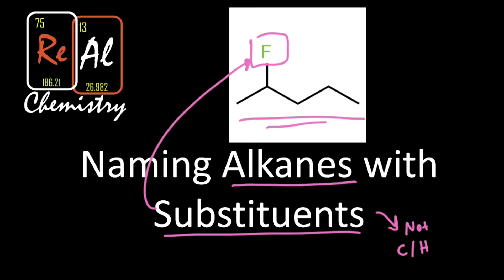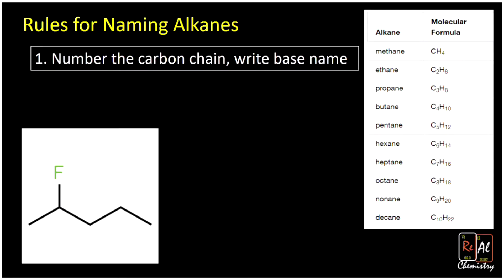So we've got to start somewhere to get to those really cool things. There's a whole list of rules we'll go through one at a time, working practice problems as we do it. The first rule for naming alkanes says: number the carbon chain and write the base name. So I'm going to count the carbons — in this case, one, two, three, four, five.